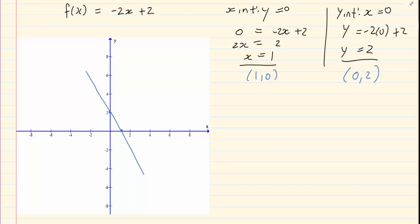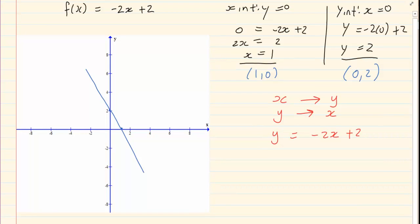How do we do the inverse? When we're doing the inverse, what we are saying is that x would become y and y would become x. So we've got y = -2x + 2. We're going to change x and y. Where y is I'm now going to put an x, and where x is I'm going to put a y.